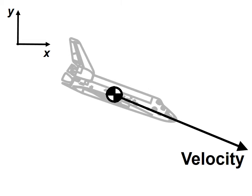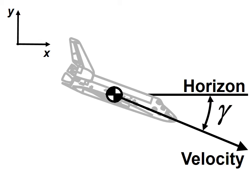Now we draw the appropriate geometry of the problem. First we show the shuttle's velocity vector as an arrow. Next we show the horizon and the angle between the velocity vector and the horizon. We call the angle the flight path angle and give it the symbol gamma.